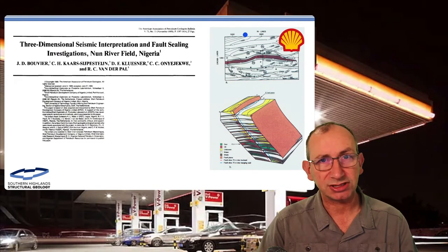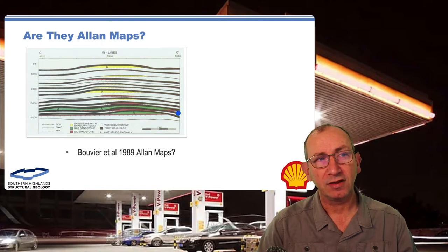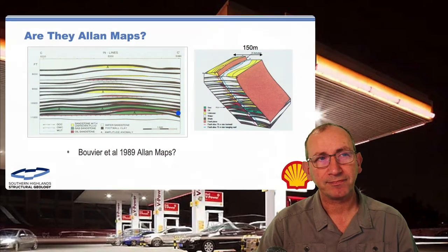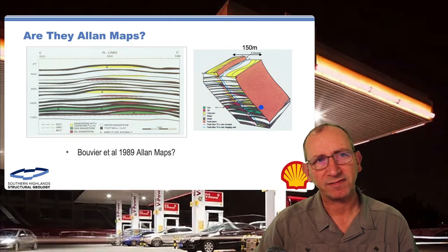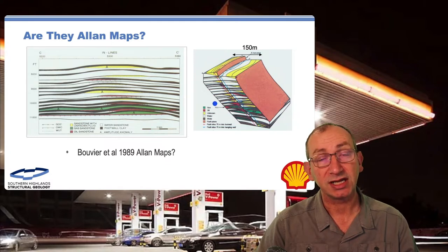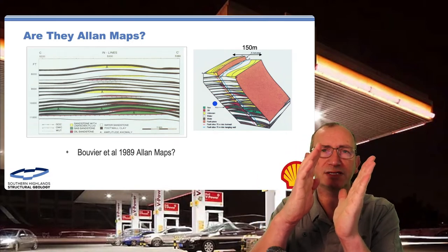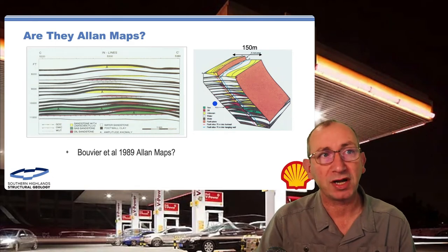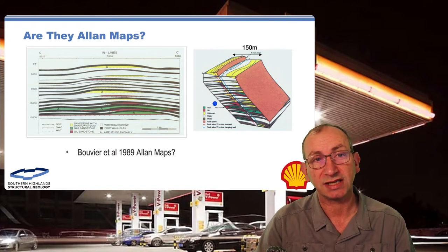The Nun River paper, which covers the Niger Delta and is pertinent to our Nigerian examples, is based on their first three-dimensional rotation tools. In the paper they describe picking a fault plane and going 75 meters out into the hanging wall for an interpretation, then another interpretation 75 meters into the footwall — effectively doing interpretations that are 150 meters apart and slamming them together to produce an Allen map. I thought I'd go back and see if I could replicate the work.